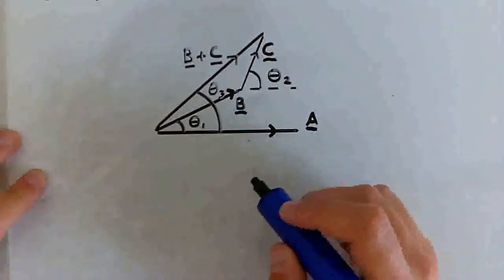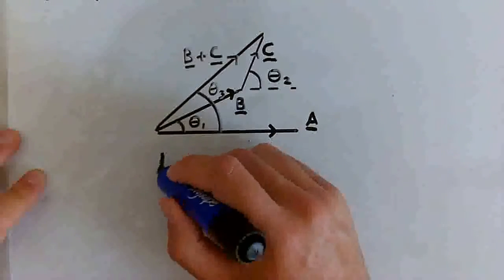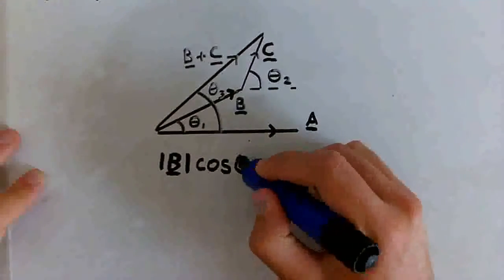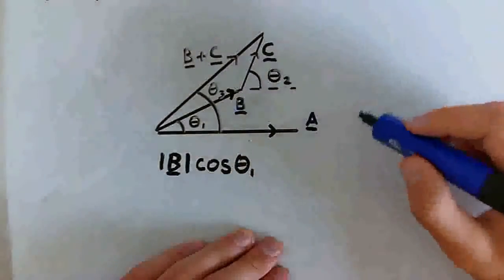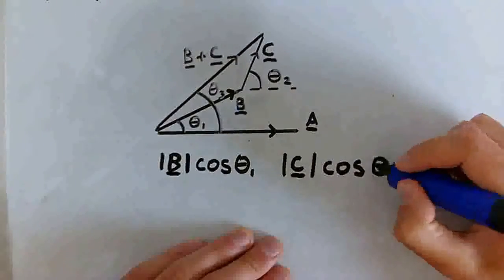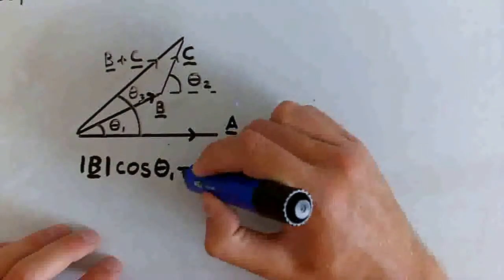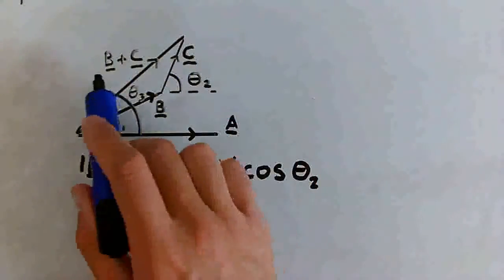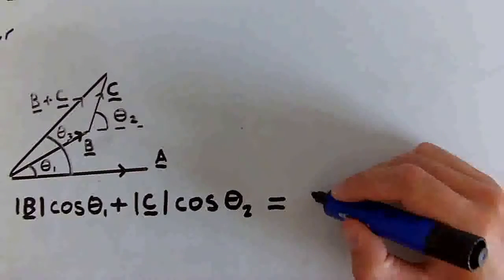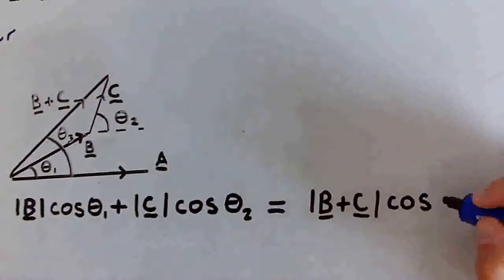Looking at the horizontal components of each vector, let's start with vector B. We can write the horizontal component of vector B as the magnitude of B times cos of theta 1. And we can write the horizontal component of vector C as the magnitude of vector C times the cosine of theta 2. The sum of these is actually the horizontal component of the vector B plus C, which we can write as the magnitude of B plus C times the cosine of our new angle, theta 3.